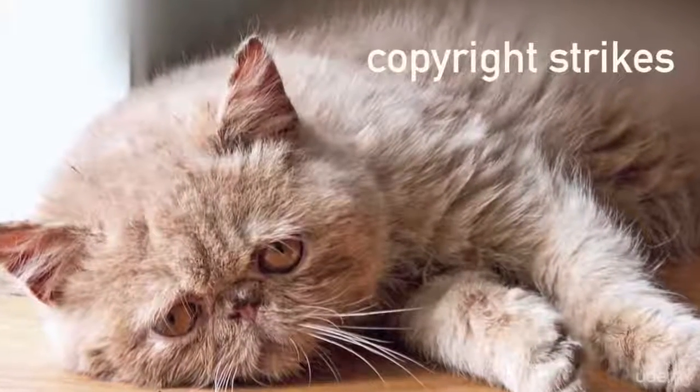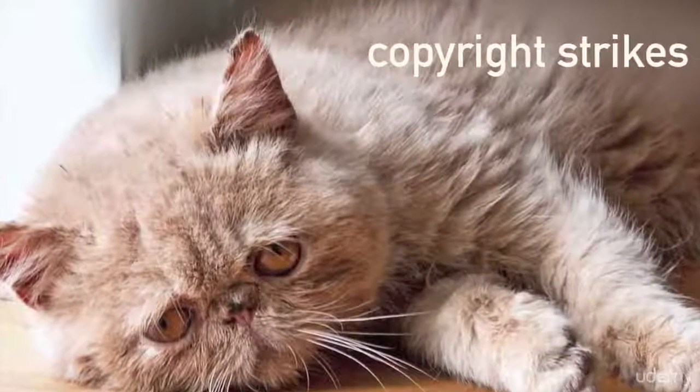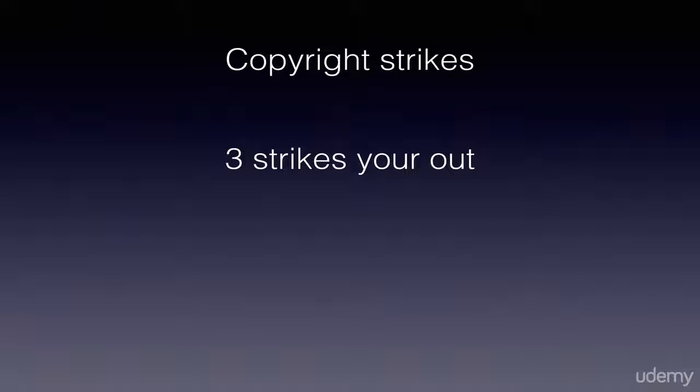Let's talk about what copyright strikes are and how to avoid them. A copyright strike happens when YouTube gets a formal, complete, legal request to take down some content — by law, they have to do it, and then they put a strike on your account. Basically, someone who owns the copyright to either the video or audio you used has asked for it to be taken down. It's like baseball — three strikes and you're out. Your account is terminated and that Google account can no longer create a new YouTube account.